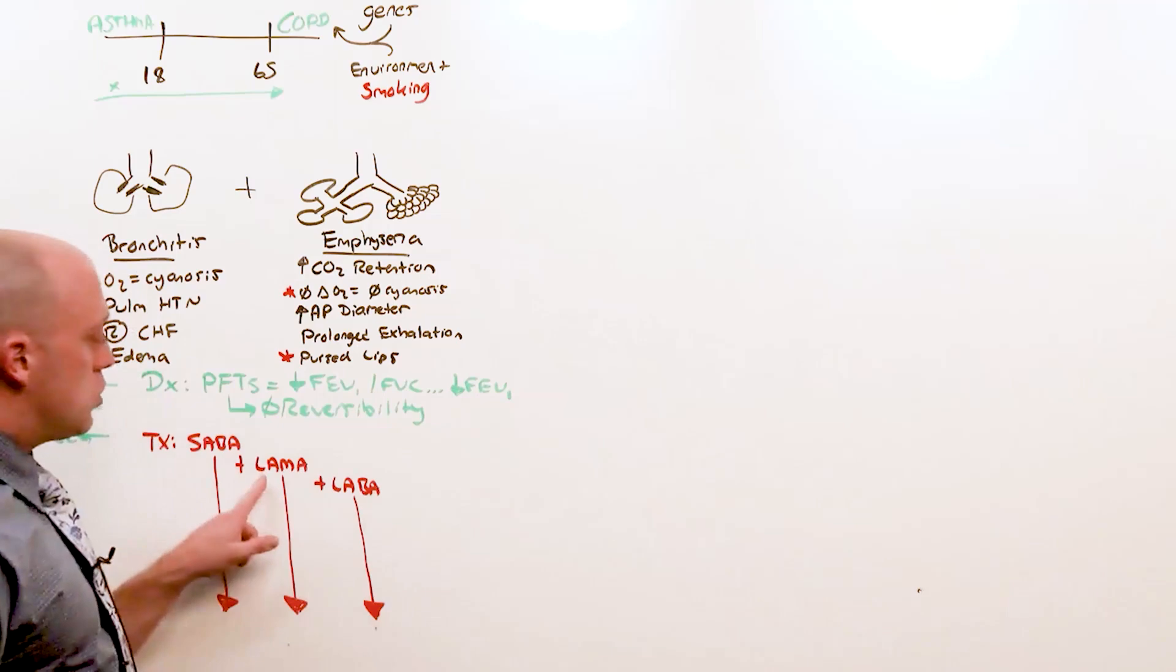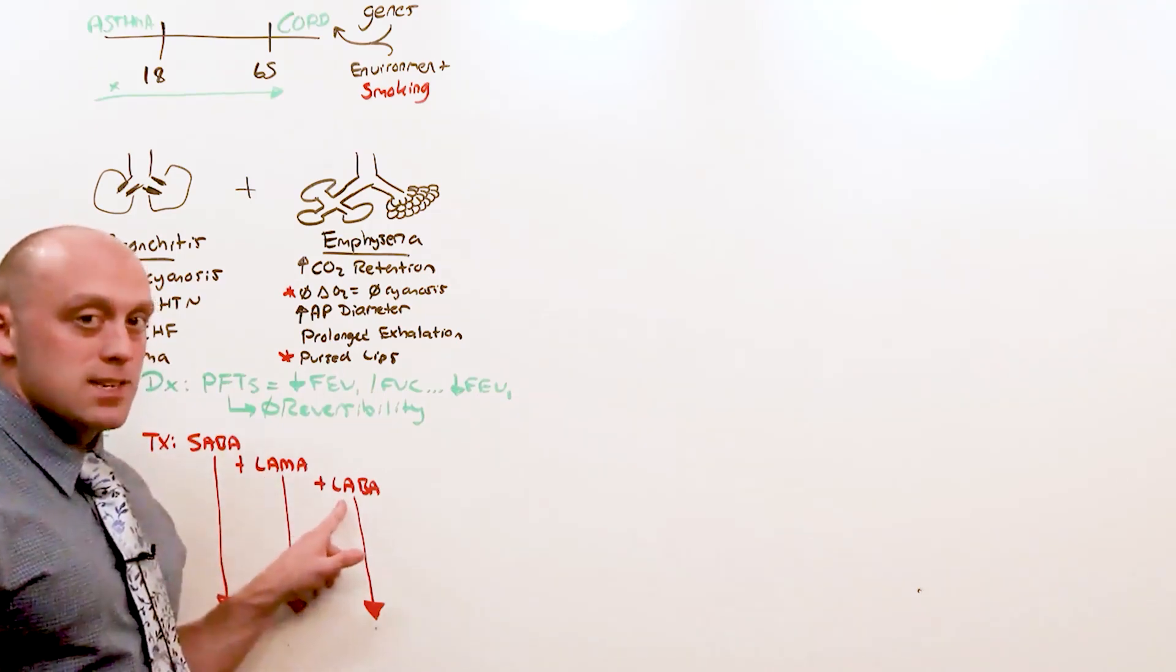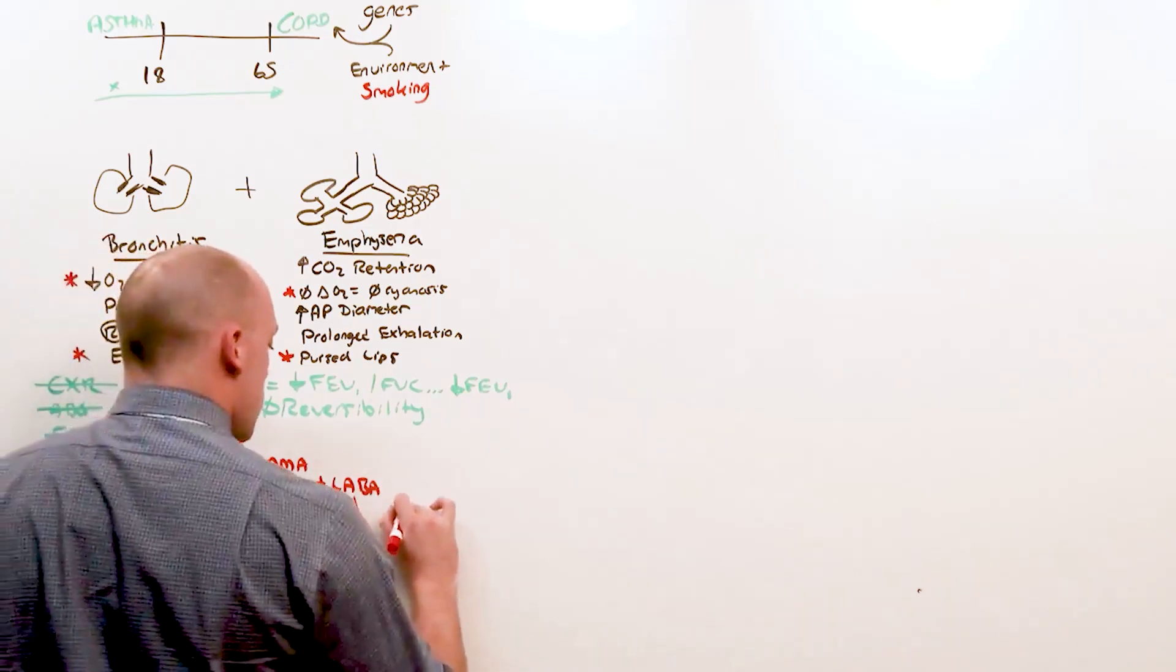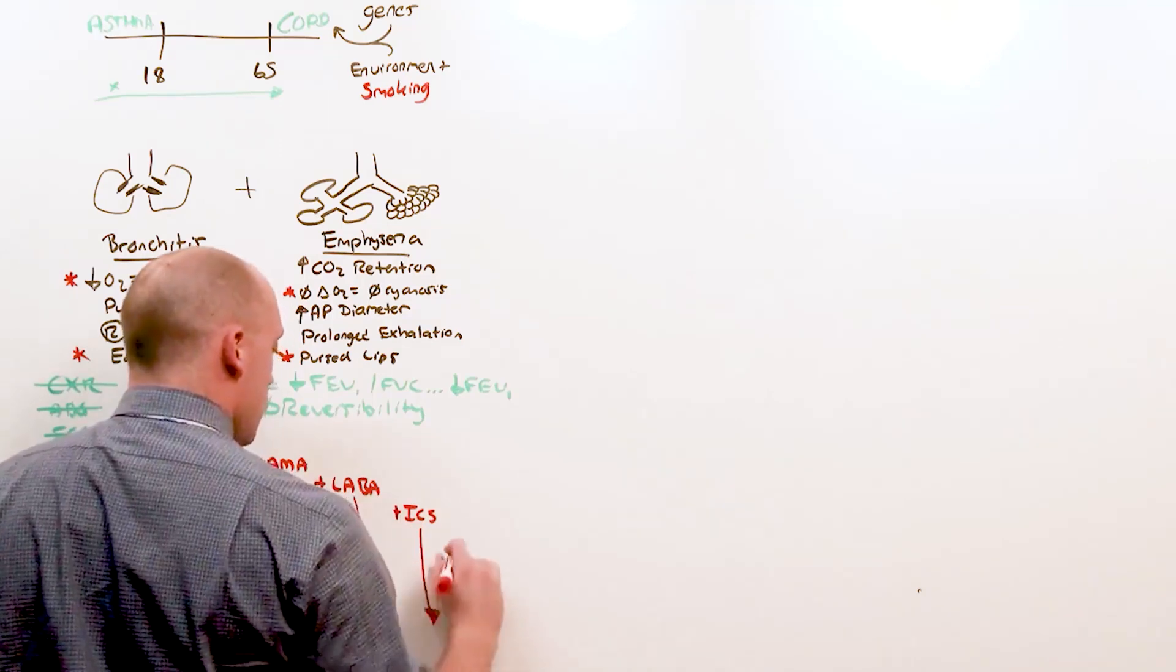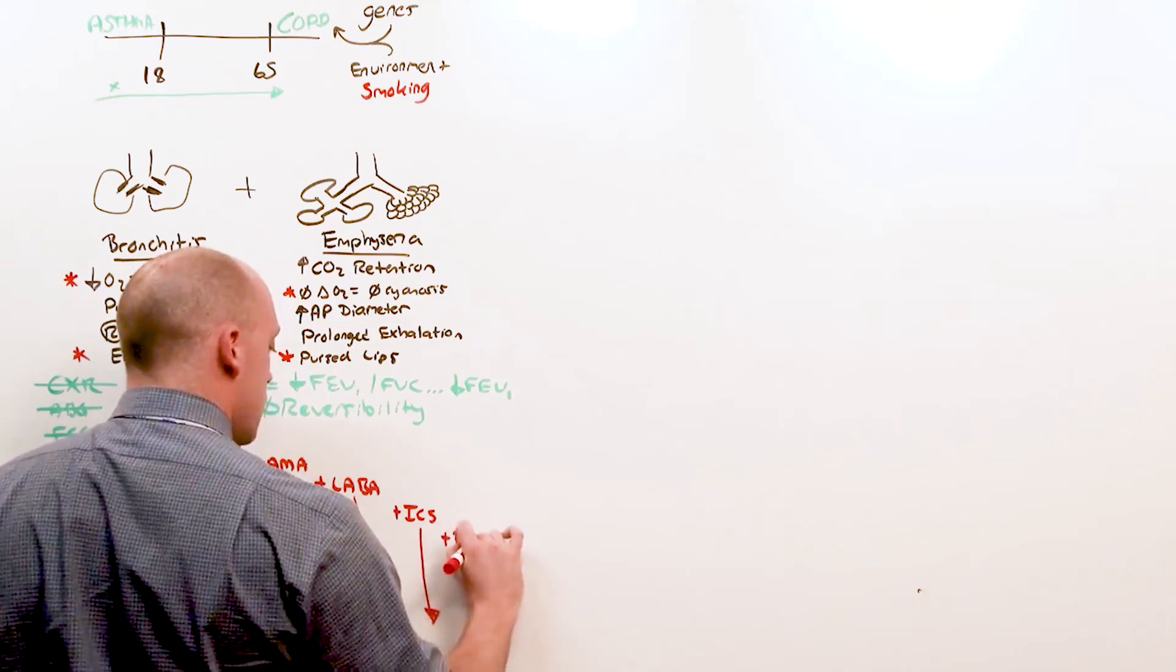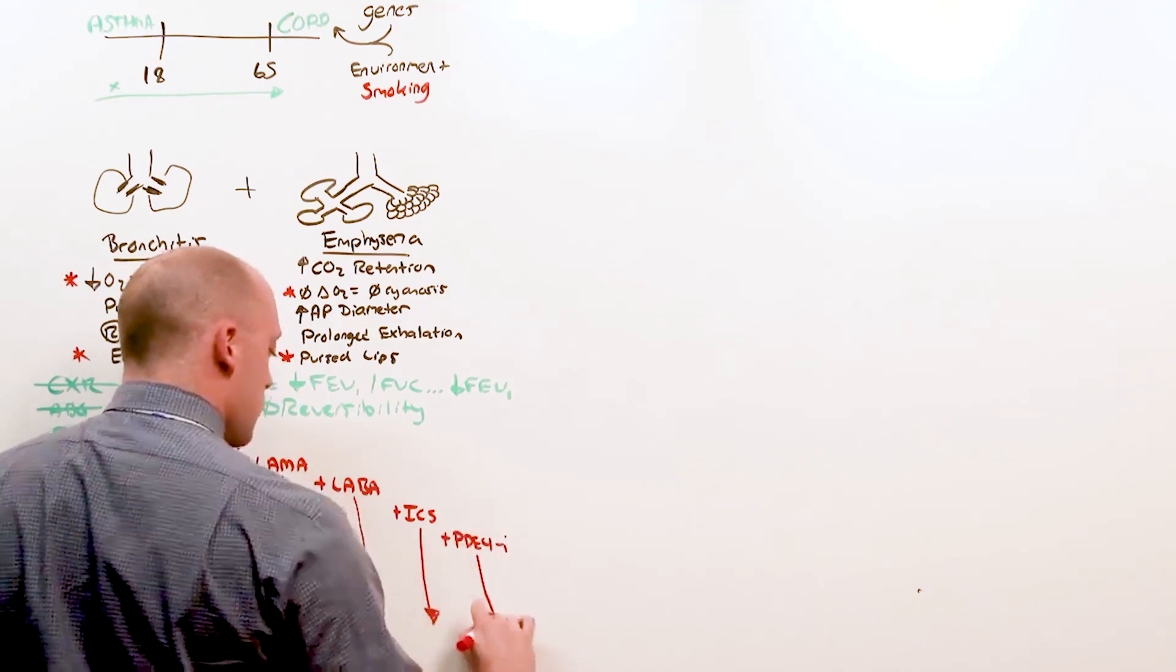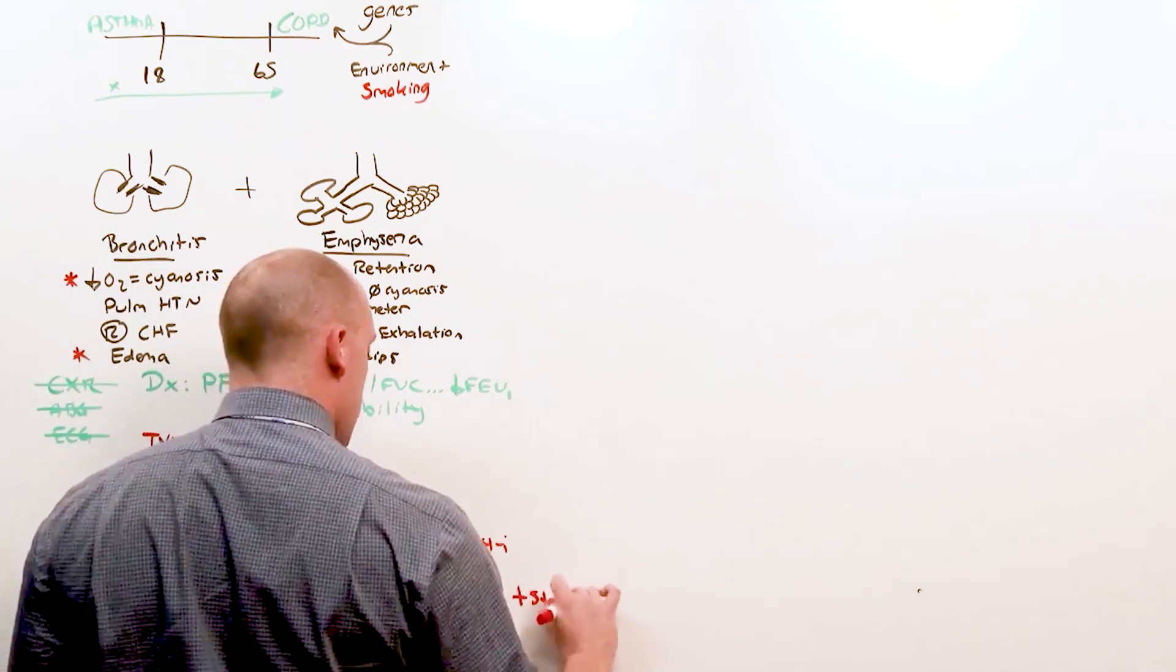In COPD, you choose the long-acting muscarinic antagonist and add the long-acting beta agonist next. Only if that doesn't work do you add inhaled corticosteroids. And recently, we've added a new class, the phosphodiesterase-4 inhibitors. And if all else fails, you add steroids. And of course, you know your job is to get people off steroids.